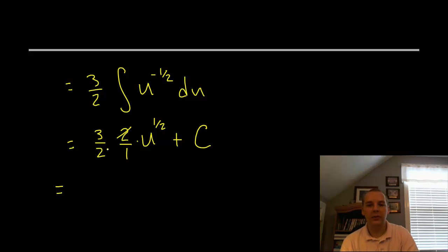So final answer, these 2's will cancel so you'll have 3. This 1 half power is a big square root, we'll have plus c.